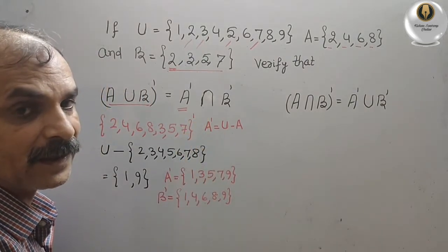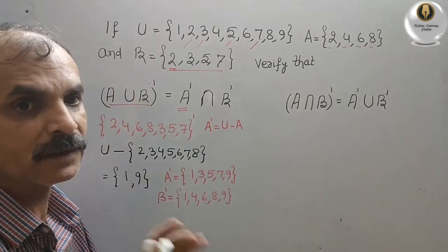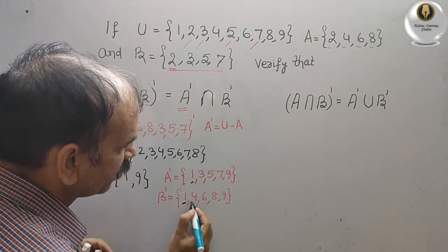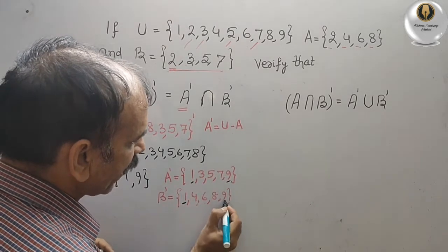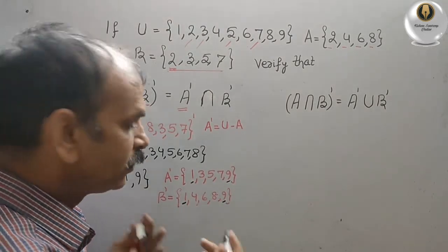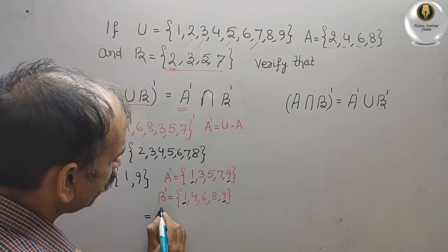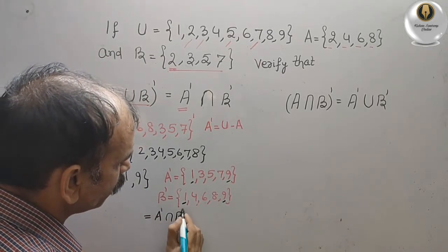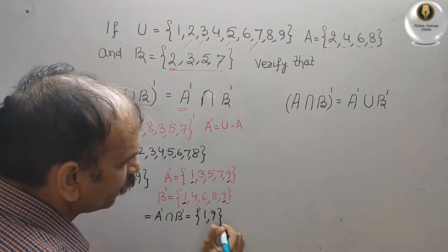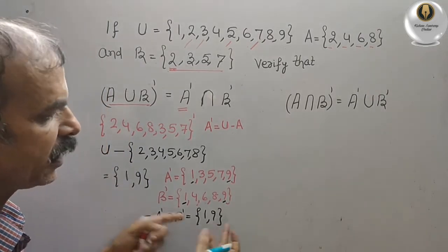Now intersection means what is common in both. We can see: 1 is in A complement and 1 is in B complement, and 9 is in A complement and 9 is in B complement — nothing else is common. So therefore A complement intersection B complement is {1,9}. This is your RHS. LHS and RHS are the same — first law verified.